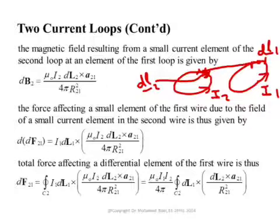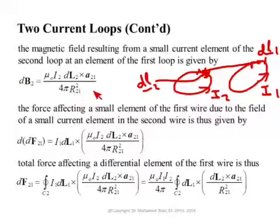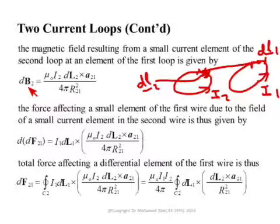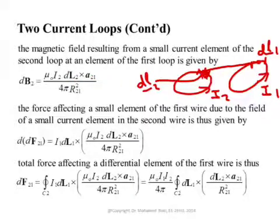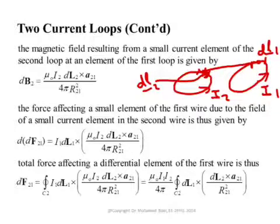Let's go step by step. The magnetic field resulting from the second wire at the first wire is found using the Biot-Savart law, with mu-naught included because we are calculating the magnetic flux density vector B, where B = mu * H. For a small element dl2 in the second wire, we have dl2 cross a21, where a21 is the unit vector pointing from that element to the element in the first wire where we are calculating the field, and r21 is the distance between them.